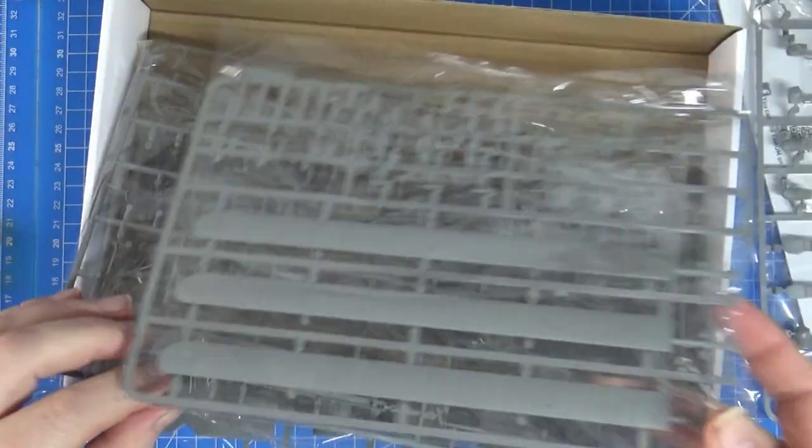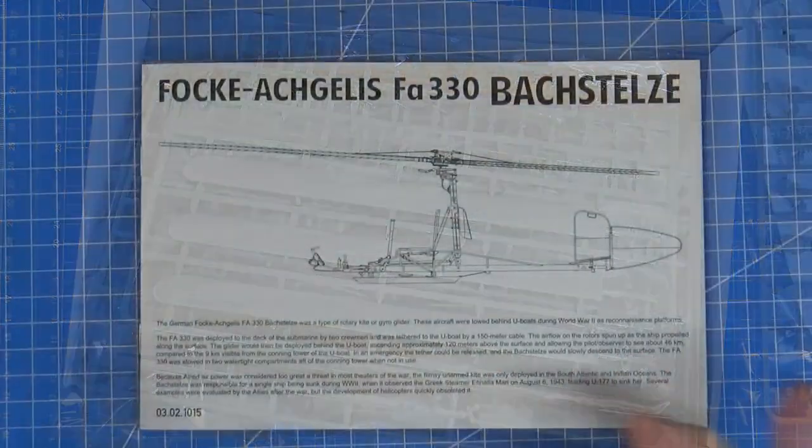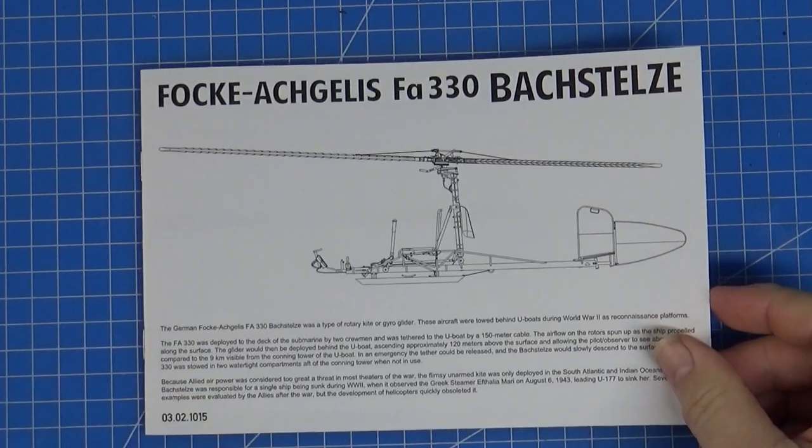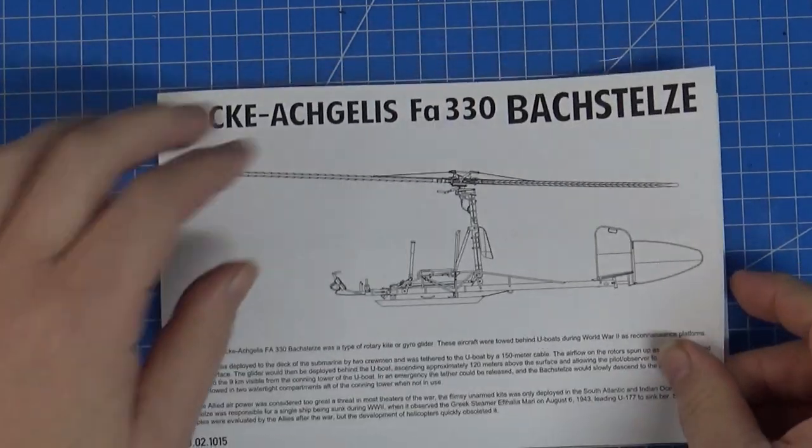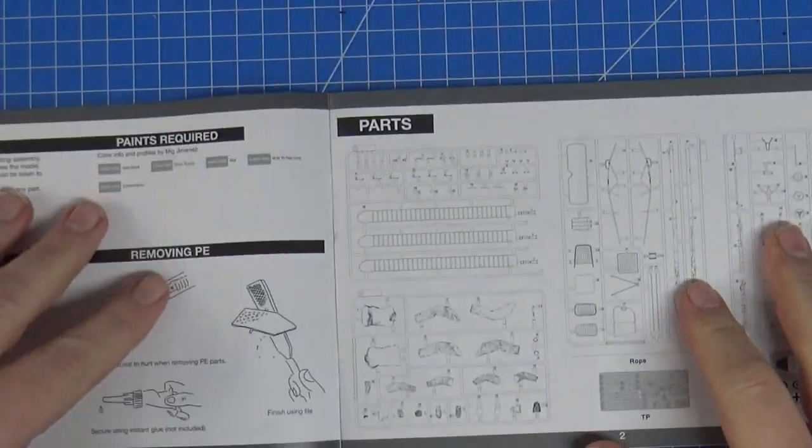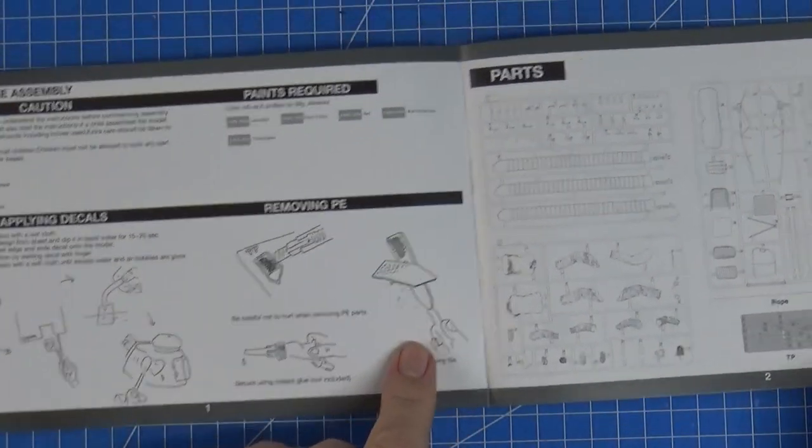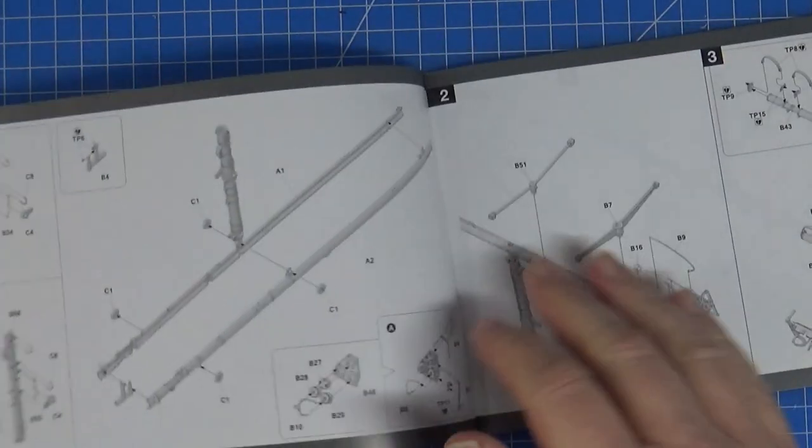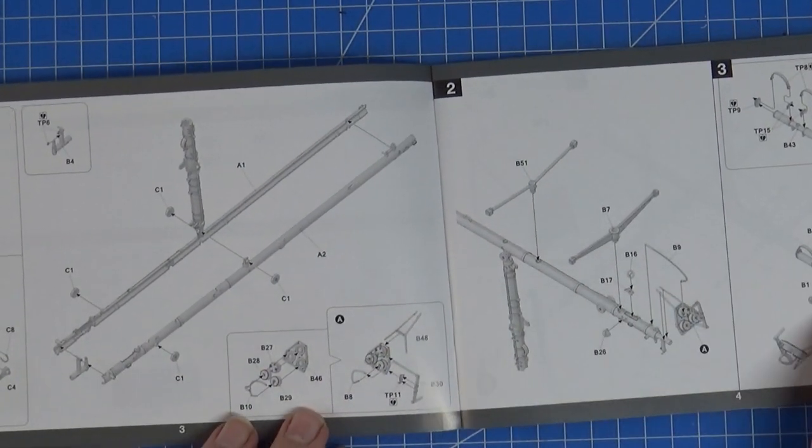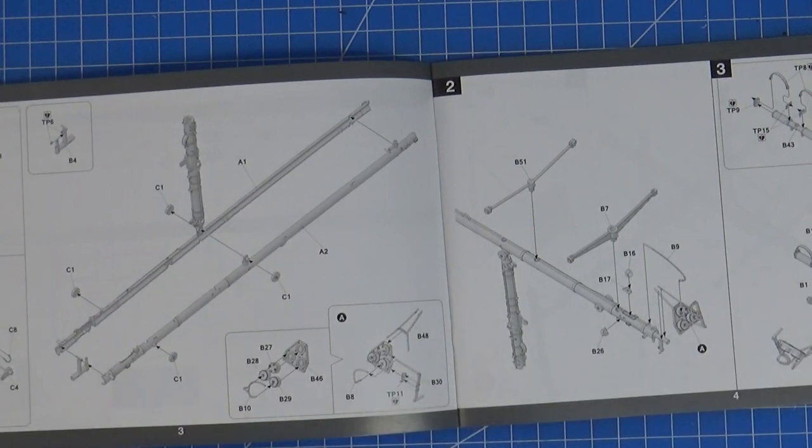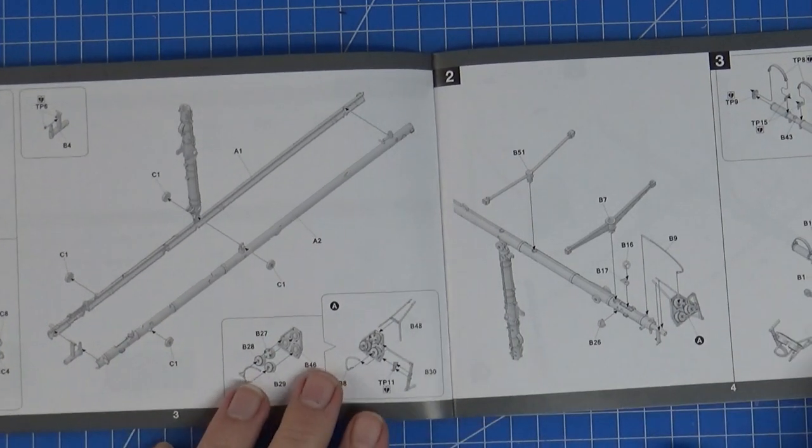So here we go, we've got three major sprues. Let's start with the instructions with the nice little blurb at the front. We've got a nice color booklet here and it's the usual don't glue it to your ear, whatever, sprue map. And then we get to the instructions. So I've had a quick look through the instructions before I started filming. And at first, oh, this looks fairly easy, but it starts to get complex.